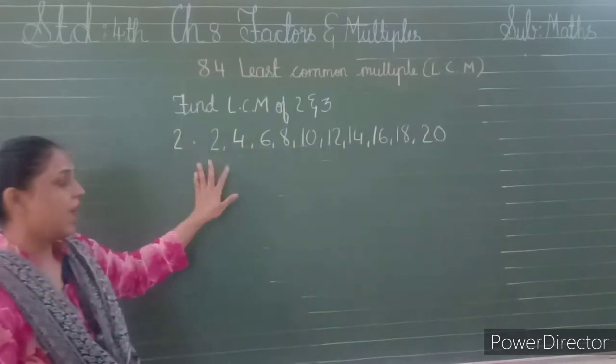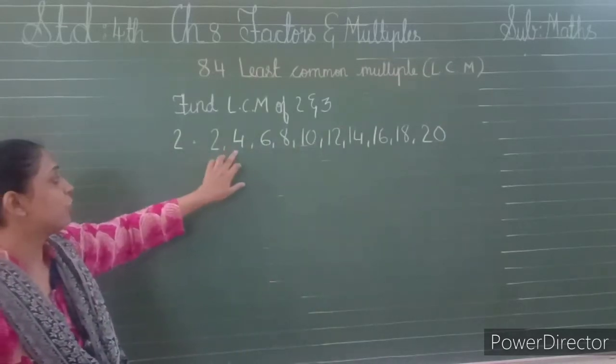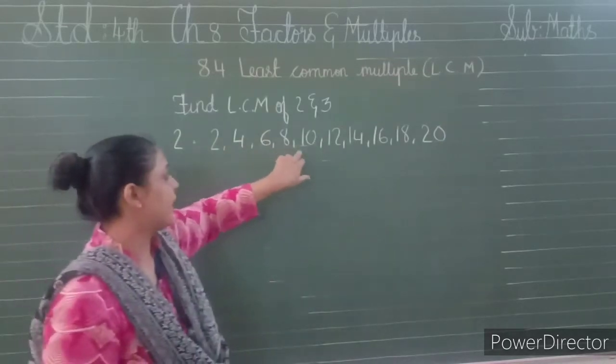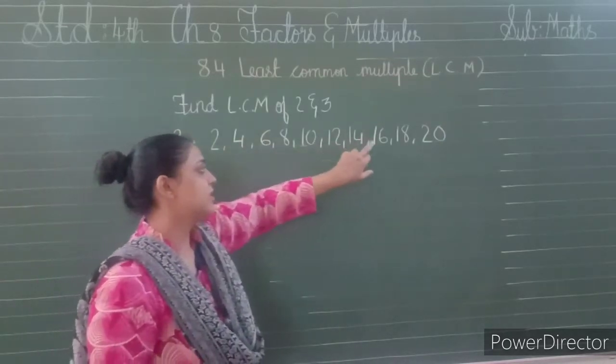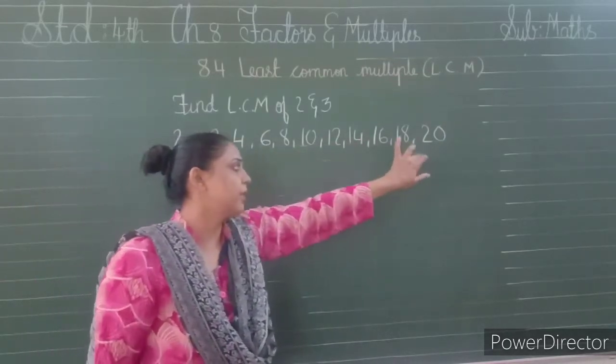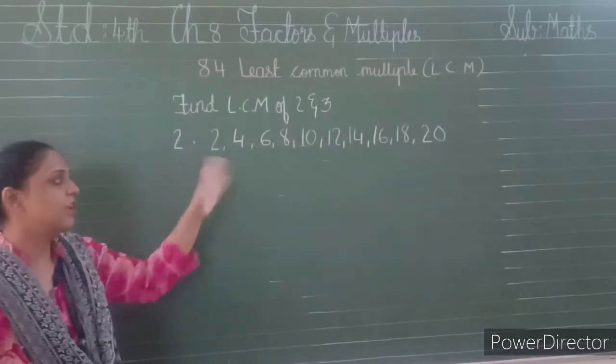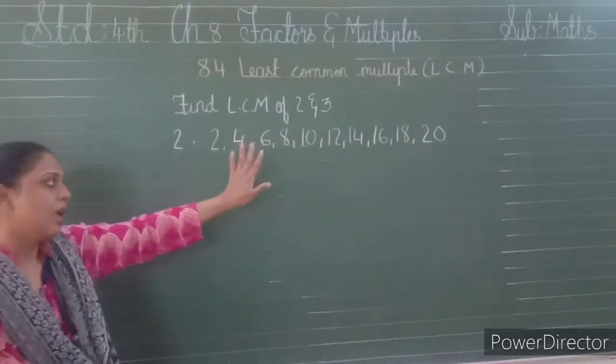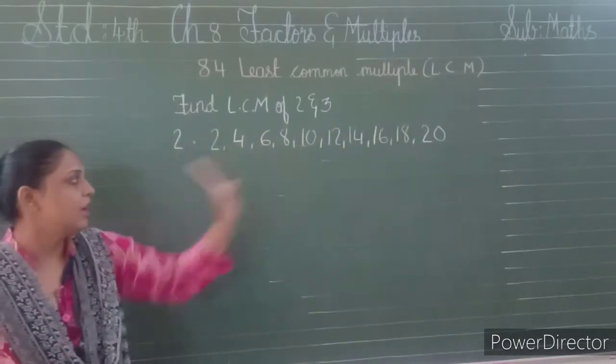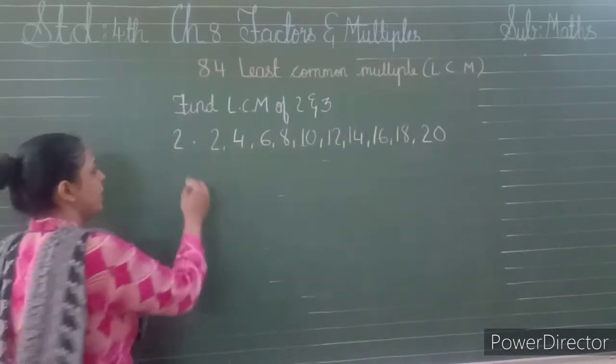So our multiples of 2 are: 2, 4, 6, 8, 10, 12, 14, 16, 18, and 20 — these all are our multiples. We can go on but I am stopping till 20.